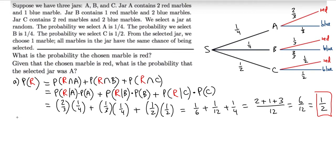The second part is a little more interesting. Given that the chosen marble is red, what is the probability that the selected jar was A? So we want P(A|R) — the probability you selected jar A given that you chose a red marble. This might seem backwards, since the marble color depends on which jar you chose.